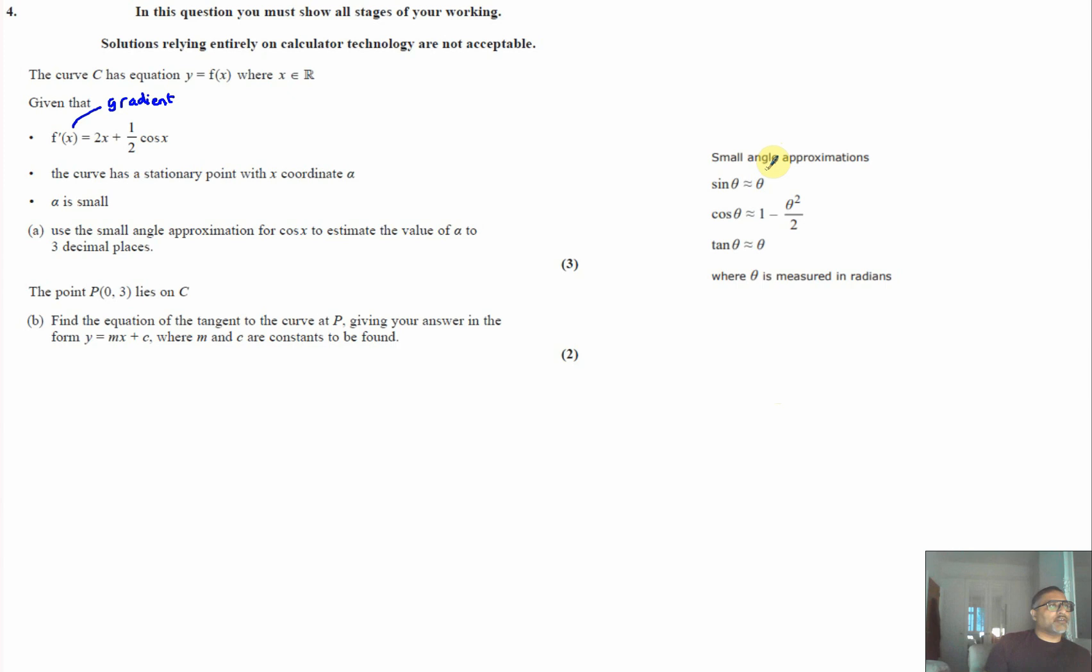The one that we'll be using: when angles are small and measured in radians, we can replace sine theta with theta, cos theta with 1 minus theta squared over 2, and tan theta is just theta as well. This will work for any small angle approximation.